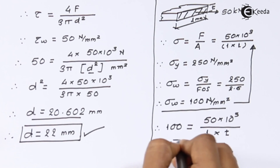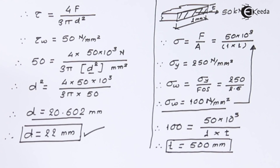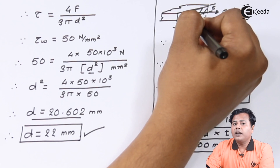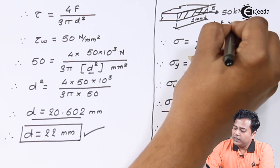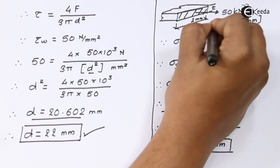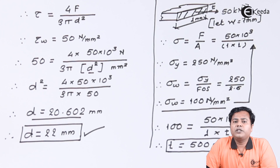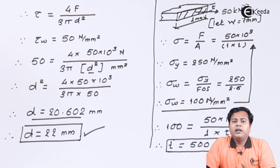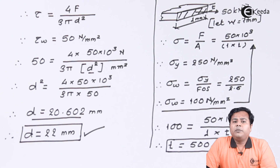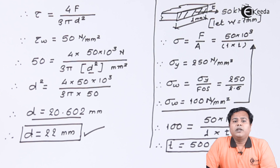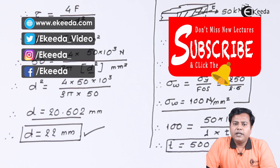This is the answer to the first sample question demonstrating how to solve a design problem. We first identified the types of stresses acting on the body, then figured out their values, and depending on those values we determined the required dimensions — the rivet diameter and the plate thickness. Thank you so much for watching. If you liked this video, please subscribe to Ikeda.